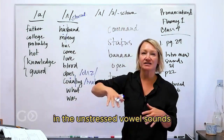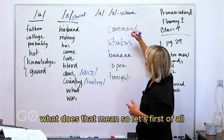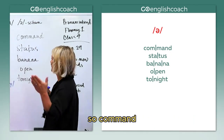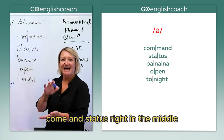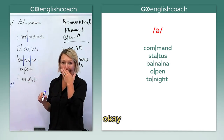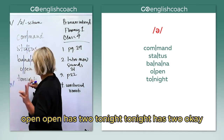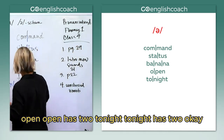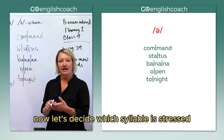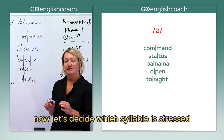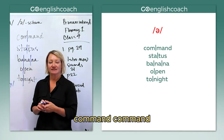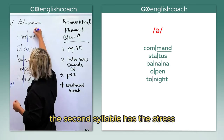Now, when we talk about schwa in the unstressed vowel sounds, what does that mean? First of all, let's start with these five words and divide them into their syllables. So 'command' and 'status' — right in the middle. 'Banana' has three: ba-na-na. 'Open' has two. 'Tonight' has two. So we've got two, two, three, two, two. Step one is done. Now let's decide which syllable is stressed — 'command' — yes, the second syllable has the stress.